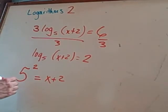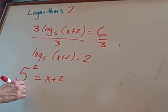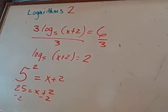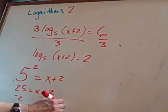Now what is five squared? Twenty-five. Twenty-five equals x plus two. We can certainly solve that. I'll take away two from both sides. I get x equals twenty-three.